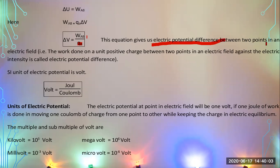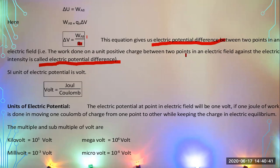Electric potential difference is the work done on a unit positive charge between two points in an electric field against the electric intensity. So ΔV is the amount of work done per unit test charge when moving it from the negative to the positive plate. That amount of work done per unit charge equals the electric potential difference.